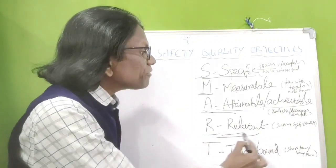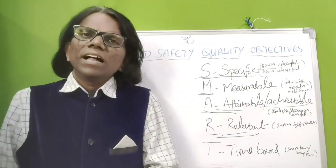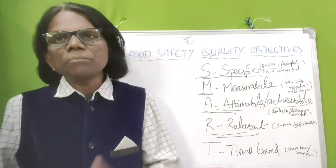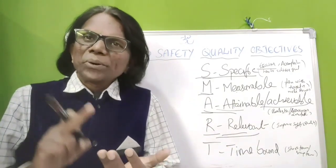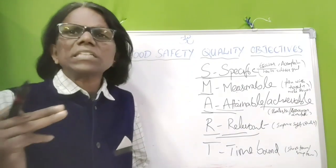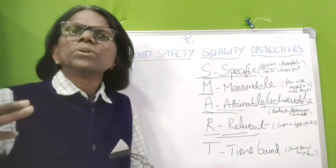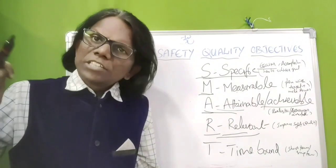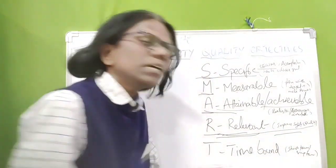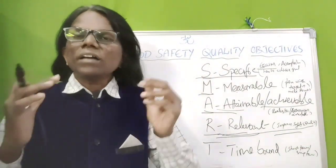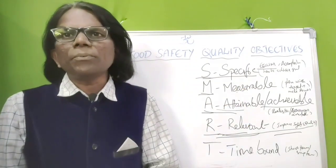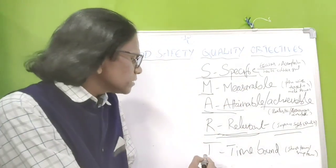R means Relevant. The quality objective's main aim is to ensure the safety and quality of food. Whatever goals you establish should improve the quality or safety of the product. The goal should be relevant — it should improve the product's safety or quality and help achieve the site's quality policy.